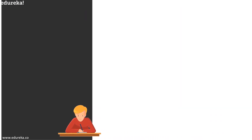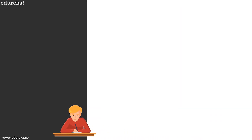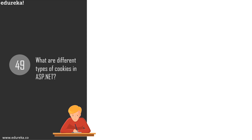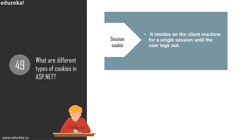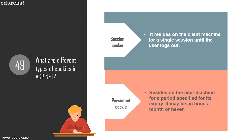Question 49: what are the different types of cookies in ASP.NET? There are session cookies, which reside on the client machine for a single session until the user logs out, and persistent cookies, which reside on the user's machine for a period specified for their expiry — it may be an hour, a month, or never, depending entirely on the expiry period specified.